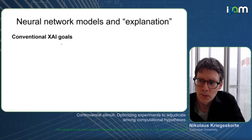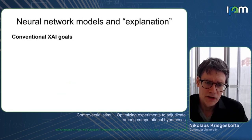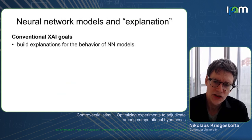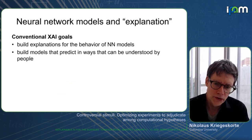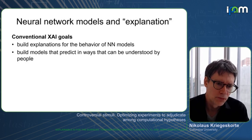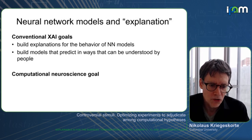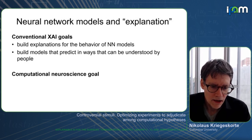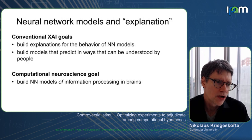Conventional XAI goals, as I understand them, are to build explanations for the behavior of neural network models and to build models that predict in ways that can be inherently understood by people. What I'm going to be talking about today is in the realm of computational neuroscience, where we build neural network models of the information processing in brains.